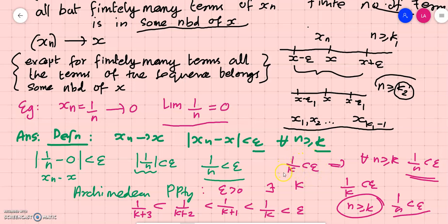If we take a natural number after that stage — k+1, k+2, k+3, k+4, etc. — the reciprocal of that number should always be less than 1/k. Since 1/k is less than epsilon, we can safely say that after the kth stage, the reciprocal of every number is less than epsilon. That is why for n greater than or equal to k, 1/n is less than epsilon for every n greater than or equal to k.